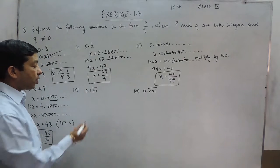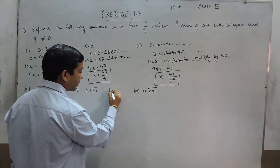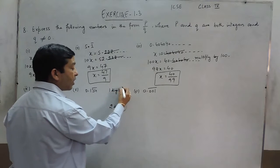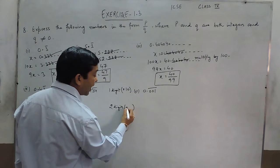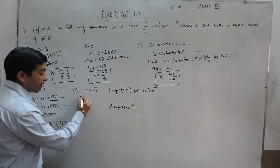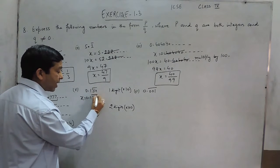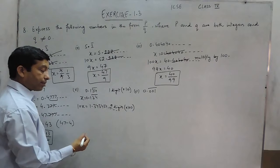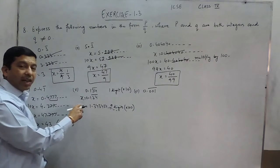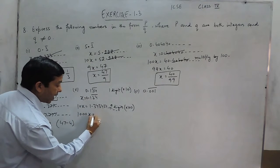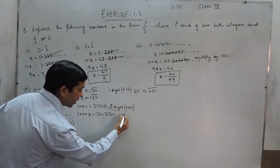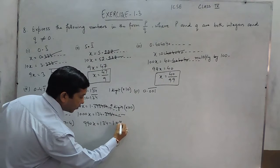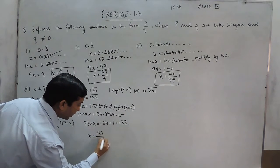The next question is 0.134 where 34 is repeating. The digit which is non-repeating is one digit and the digits which are repeating are two digits. It means first we multiply by 10 and then in the next step by 100. When we take x equal to 0.1 followed by 34 bar, 10x equals 1.343434 and so on, because one digit is non-repeating which we have taken before the decimal place. Multiplying by 100, 1000x equals 134.3434 and so on. Subtracting the two, 990x becomes 134 minus 1 that is 133, and the value of x comes out to be 133 upon 990.